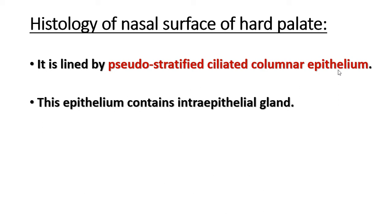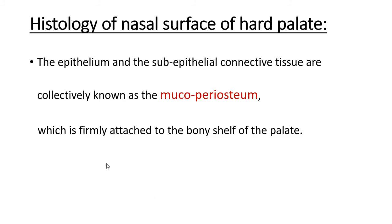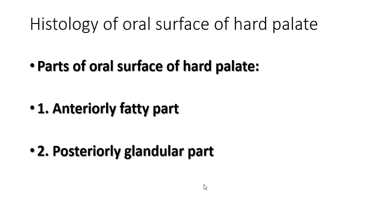The histology of the nasal surface of the hard palate: it is lined by pseudostratified ciliated columnar epithelium and sometimes contains intra-epithelial glands. The sub-epithelial connective tissue contains glands, blood vessels, and lymph vessels. The epithelium and sub-epithelial connective tissue are collectively known as the muco-periosteum, which firmly attaches to the bony shelf of the palate.